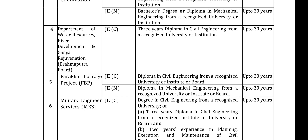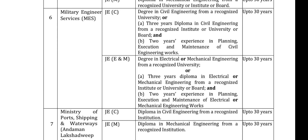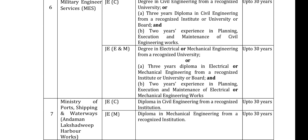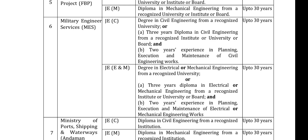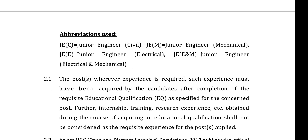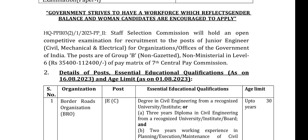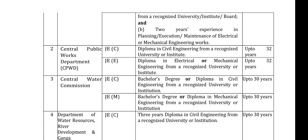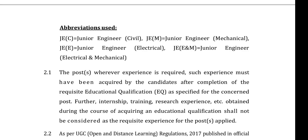This is the JE — Junior Engineer — post. Civil, Mechanical, and Military Engineering Service (MES). Electrical, Mechanical, Shipping, Water, Waste JE posts are included. This is the Central Public Works Department (CPWD). The upper age limit is 32 years, with relaxation of 30 years for certain categories.